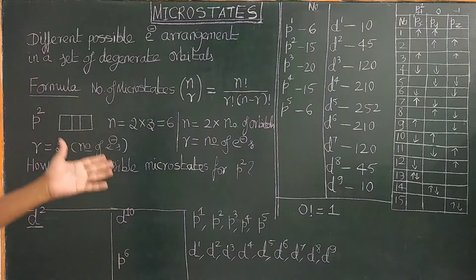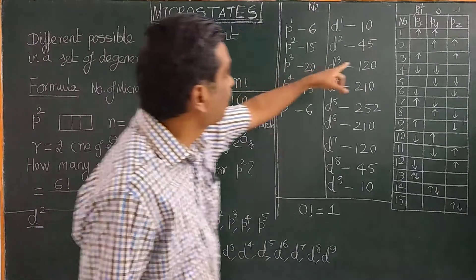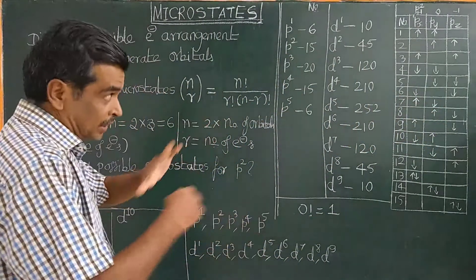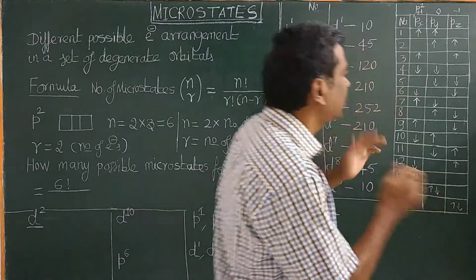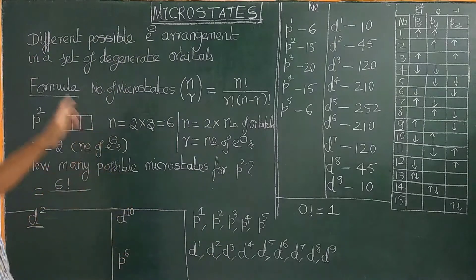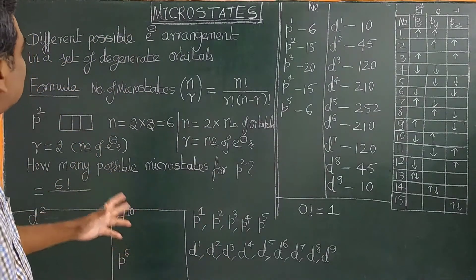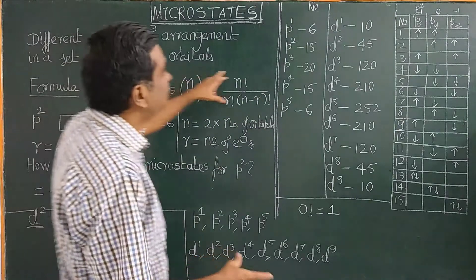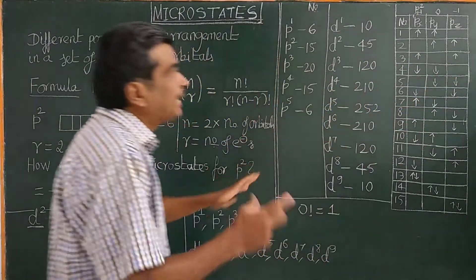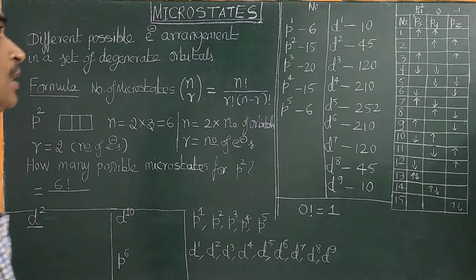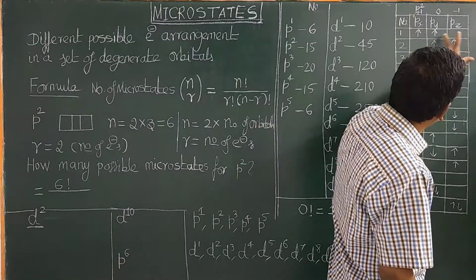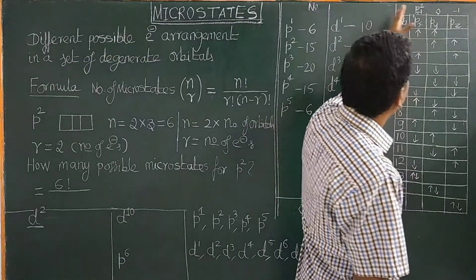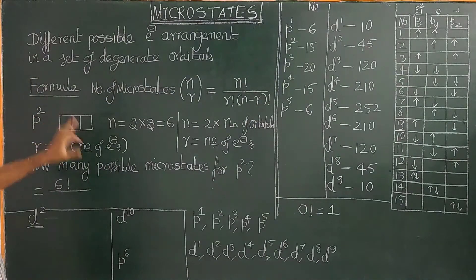What is a microstate? There are different possible electronic arrangements in a set of degenerate orbitals of slightly different energy. Each microstate has a slightly different energy. Microstates are defined as different electronic arrangements in a set of degenerate orbitals. There are 15 microstates possible for P2 electronic configuration.